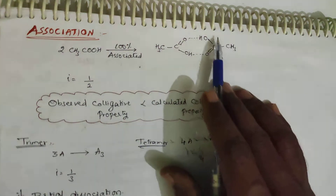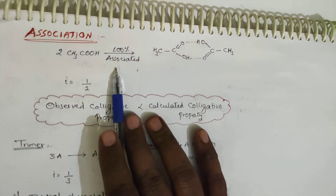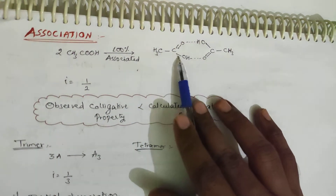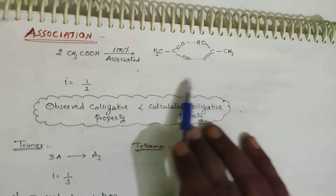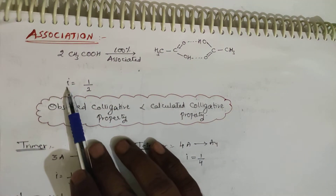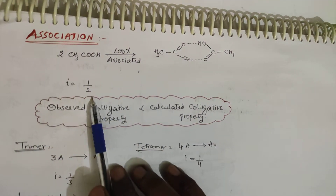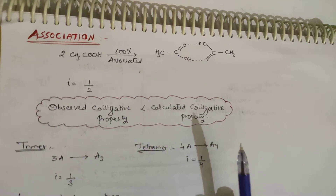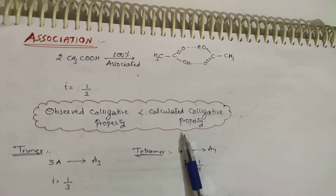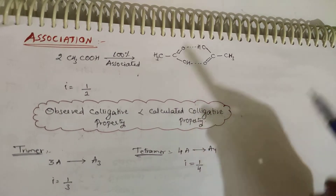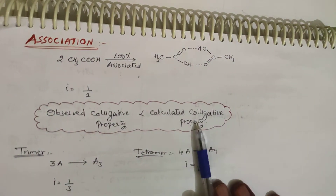Now for association: two particles combine to form a single particle. Acetic acid in benzene undergoes dimerization — two CH₃COOH molecules combine through hydrogen bonding to form one dimer. So from 2 moles initially, after 100% association only 1 mole remains. Thus i = 1/2. The observed colligative property is less than the calculated one.